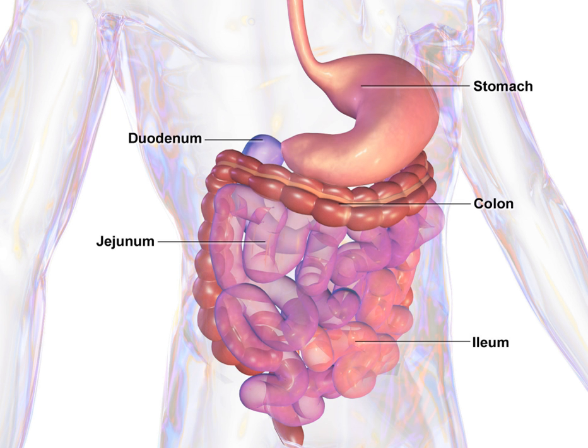The gastrointestinal tract has a form of general histology with some differences that reflect the specialization in functional anatomy. The gut tract can be divided into four concentric layers in the following order: mucosa, submucosa, muscular layer, and adventitia or serosa.